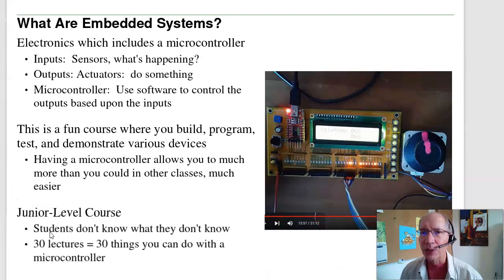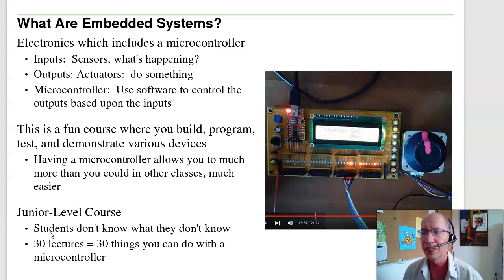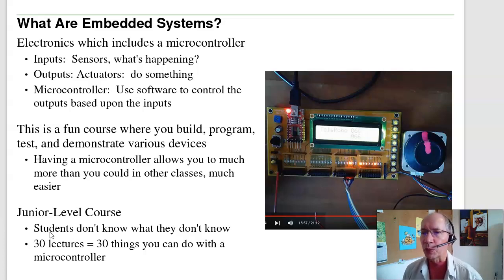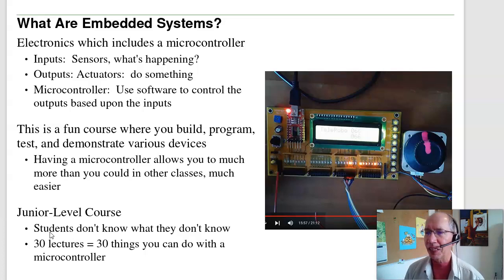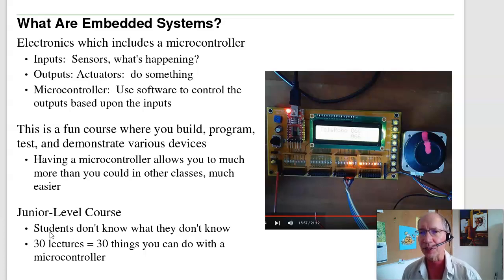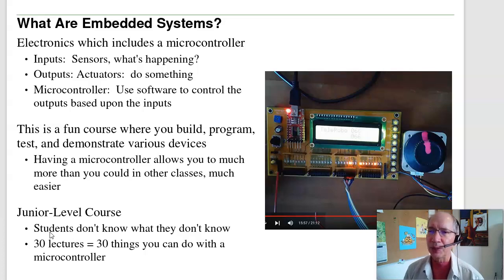What is an embedded system? An embedded system is basically anything that includes a microcontroller, which is kind of like everything. Typically you've got sensors that measure what's happening in the real world — buttons, light sensors, temperature sensors, things like that. You've got outputs: you're driving LCD displays, LEDs, stepper motors, and so on. Coordinating it all is a computer, a little microcontroller, so that I can use software to control the outputs based upon the inputs.